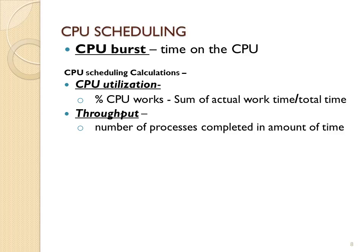Throughput is the number of processes completed in an amount of time. If one algorithm completes 10 tasks in 200 time units and a different algorithm completes 15 tasks in the same 200 time units, then the throughput is better on the one that completes 15 tasks. These are system measurements used to compare which CPU scheduling algorithm gives better CPU utilization and throughput.